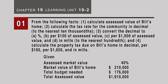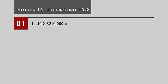His assessed value is at 40%, that's the rate. The market value of Bill's home is $210,000. So if you want to get his assessed value, take the assessed market value of 40% times the market value of his home, 210, and his house would be assessed for $84,000.